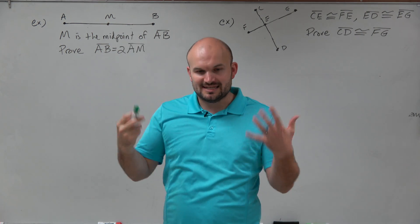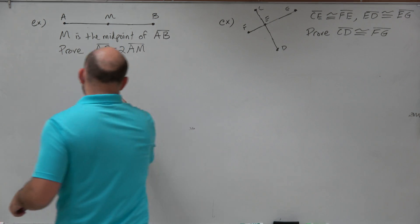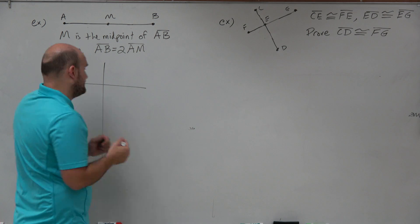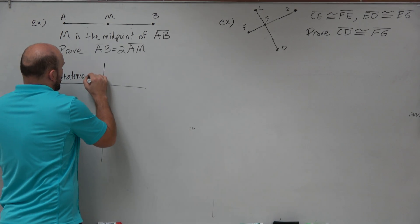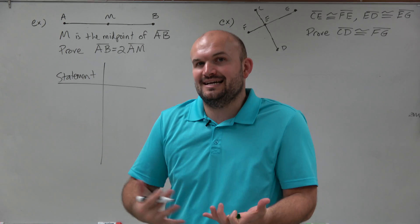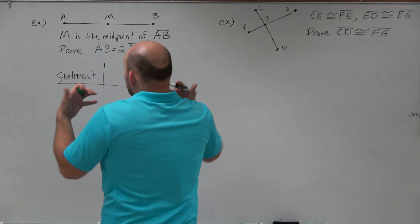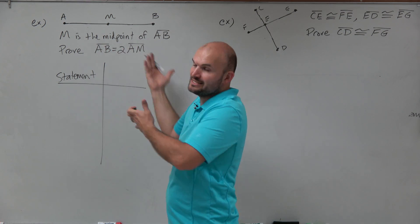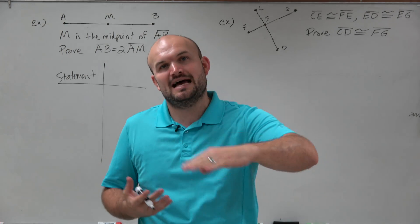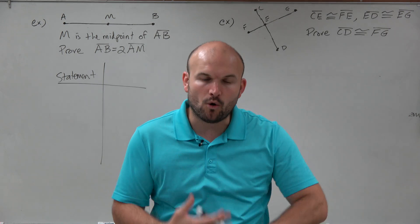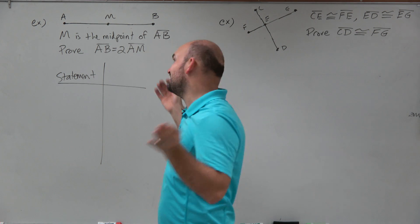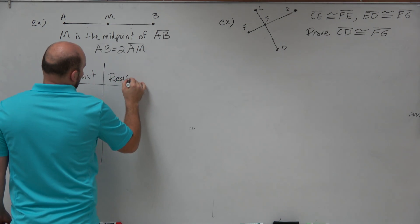So typically, you're usually going to be given some information that's going to be written out or you're going to be given a figure. In this example, I am actually given both. I'm given a figure as well as some information. So let's take the information on a two-column proof. What we have is we have two parts. We have a statement and a reason. And the reason is kind of like your justification. So what we want to do is take all the information that we have, put it down on the board and kind of organize it.